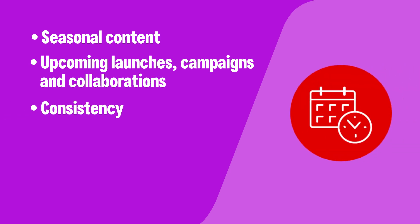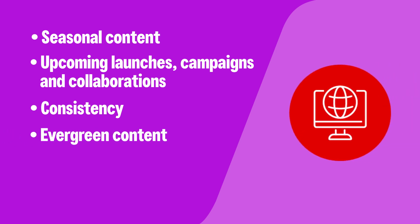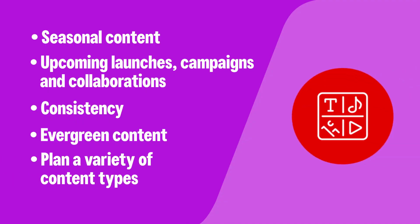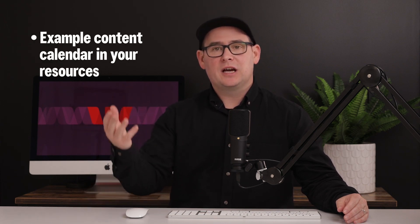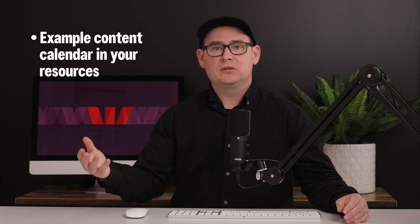Maintain a consistent posting schedule — regularity is key to keeping our audience engaged and algorithmically favored. Use evergreen content: reuse or repurpose evergreen content to maximize its value and reach. Not all content needs to be created from scratch. Also plan a variety of content types such as blog posts, videos, infographics, user-generated content, and promotional posts. Keep a healthy balance between informative, entertaining, and promotional content. You'll find an example content calendar in your downloadable resources with this section.